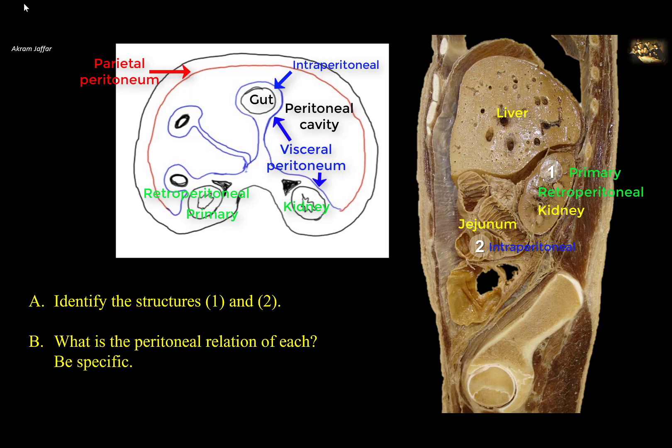There are also secondary retroperitoneal organs, which are derivatives of the gut. Initially the whole primordial gut is intraperitoneal, suspended into the peritoneal cavity by a dorsal mesentery. As organs grow, some posterior mesenteries become gradually reduced and fuse with the parietal peritoneum, leaving no mesentery. An example is the duodenum, which starts as an intraperitoneal organ and ends up mostly retroperitoneal — only its beginning and end are intraperitoneal. The same is true for the pancreas (mostly retroperitoneal except the tip of its tail), and the ascending and descending colon, but not the transverse or sigmoid colon.